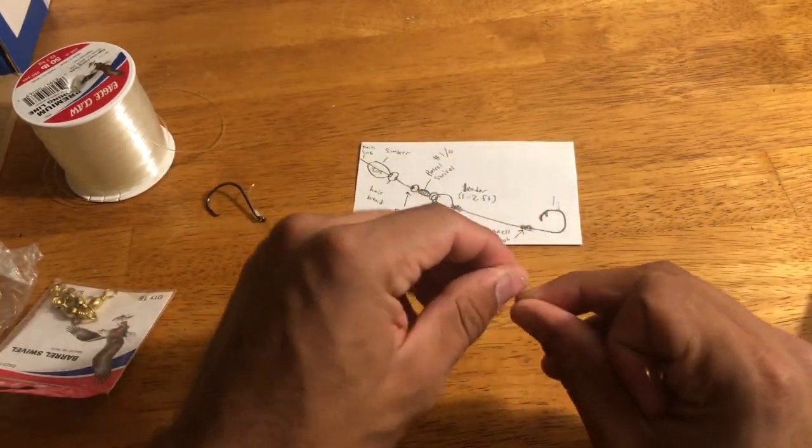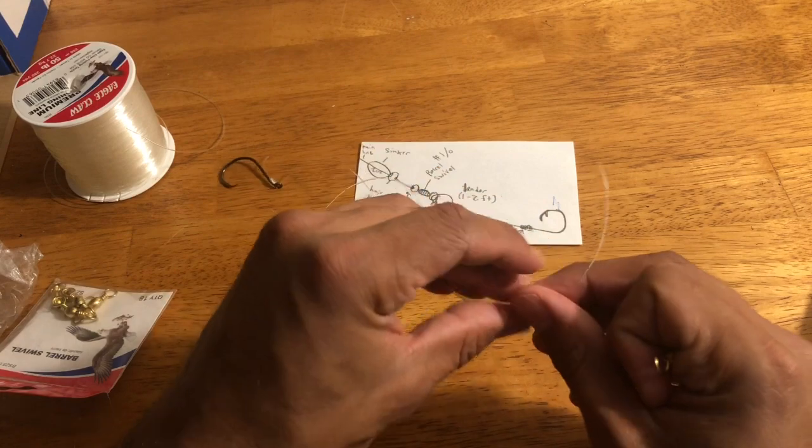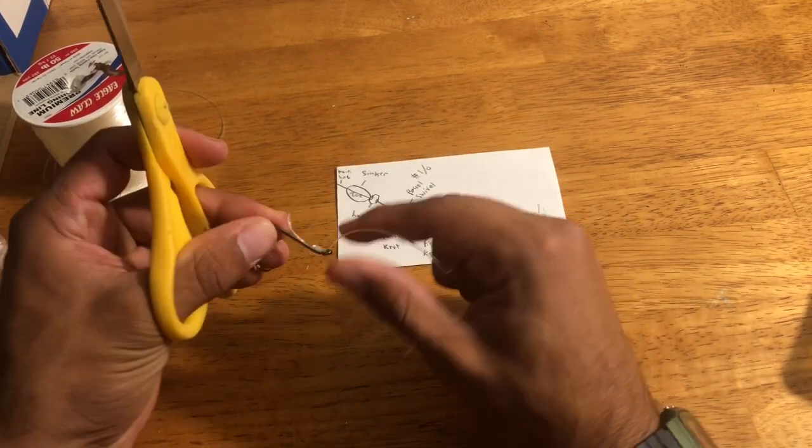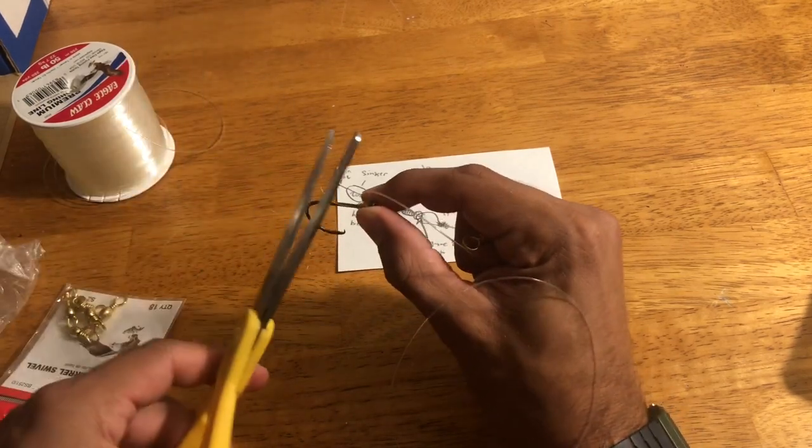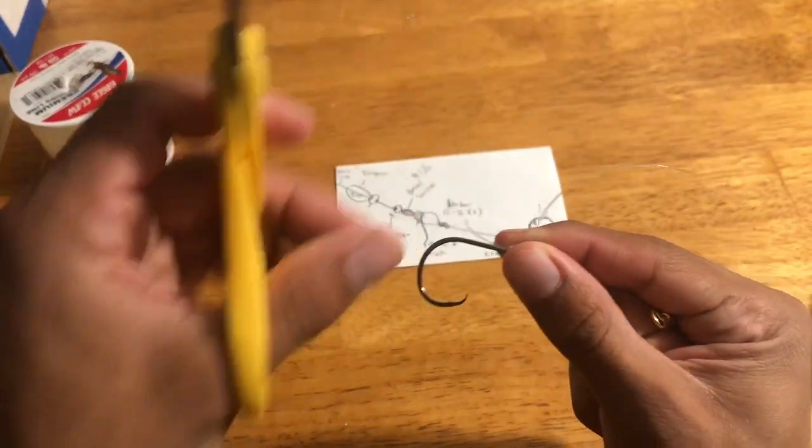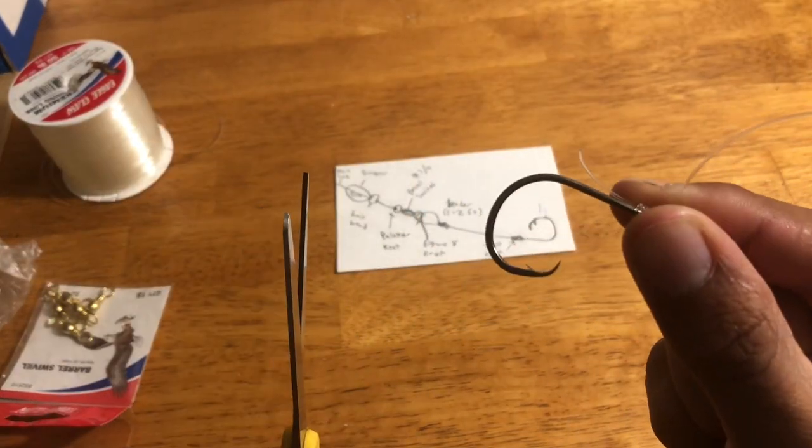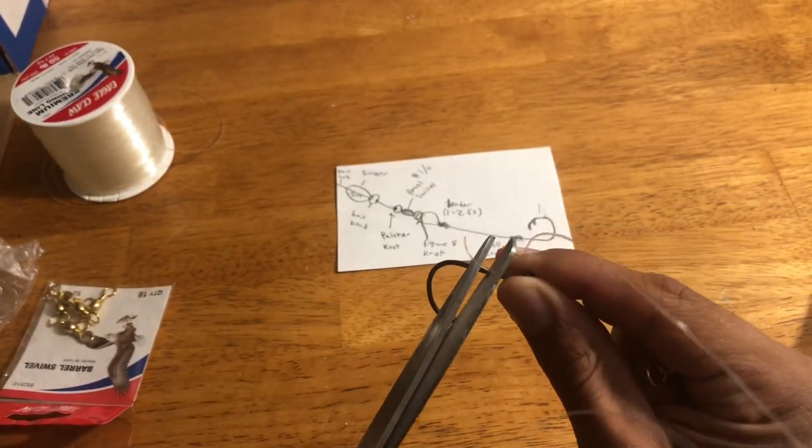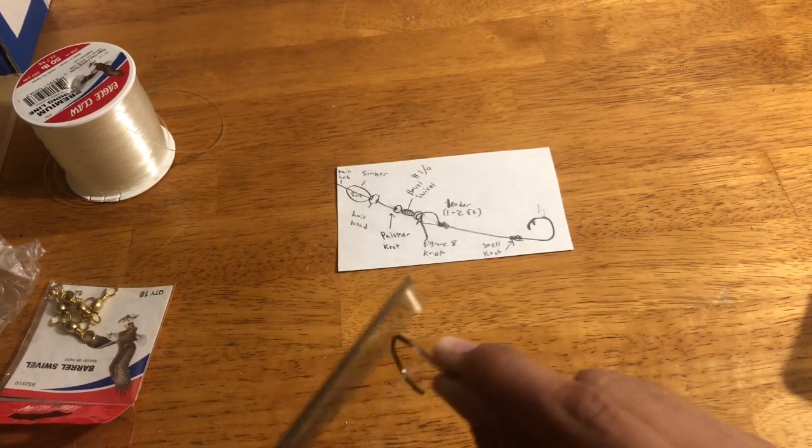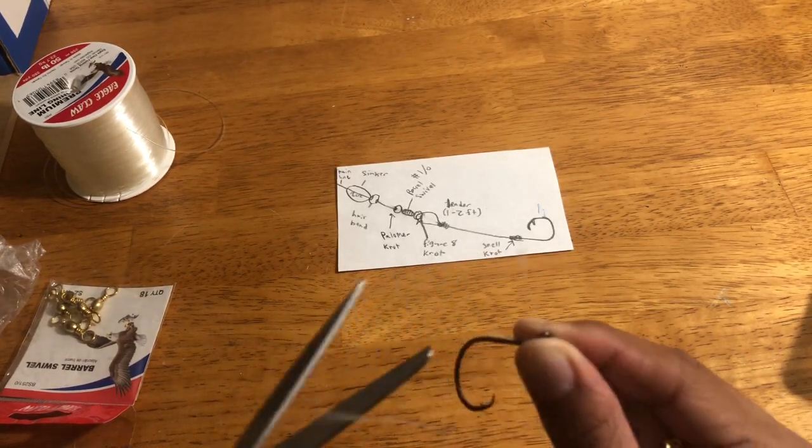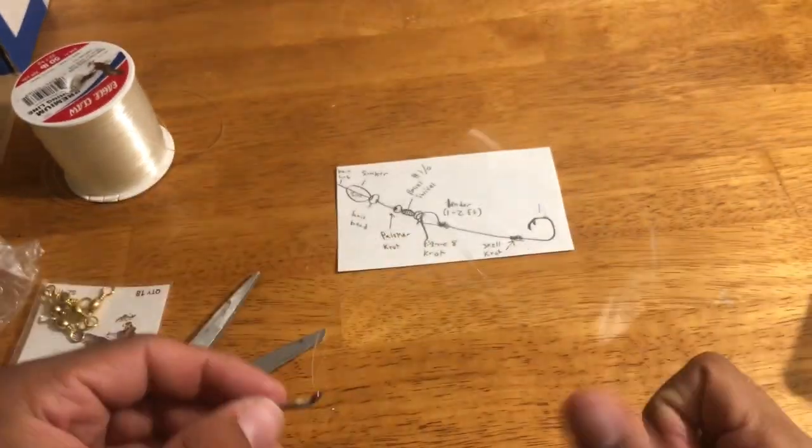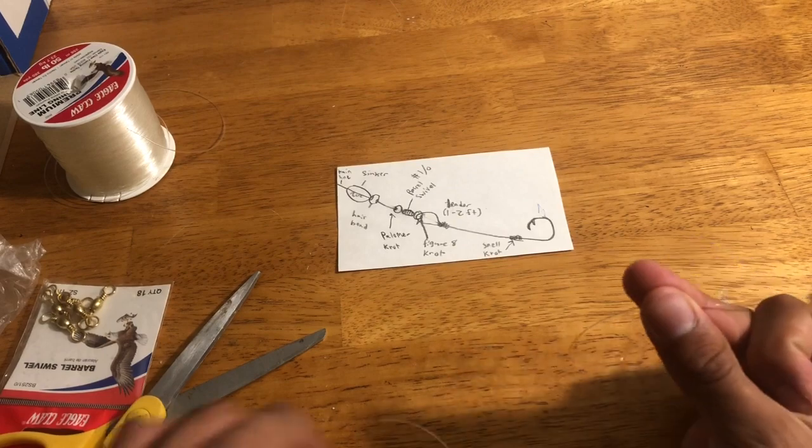And then those links will be Amazon affiliate links. So I do get a small portion of that. But it's what helps me keep making this stuff. Also, if you want, I forgot to mention on this snell knot, there'll be a little tag end and catfish don't really care about that. But if you want, you can cut it off as much as you want.